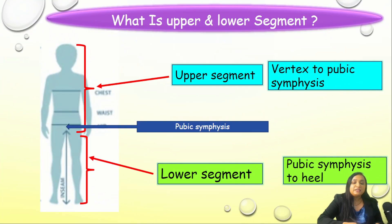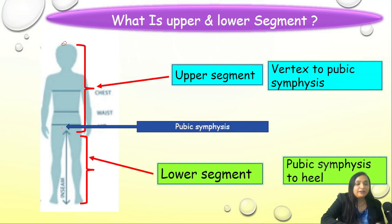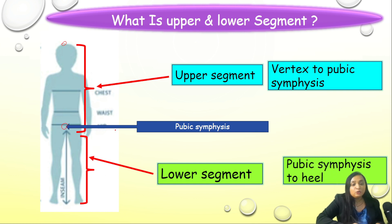Anatomically, the upper segment is from the vertex till the pubic symphysis, while the lower segment starts from the pubic symphysis till the heel.